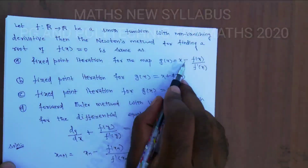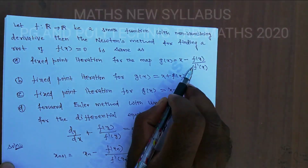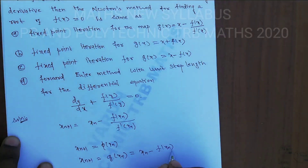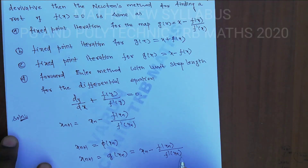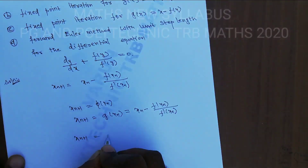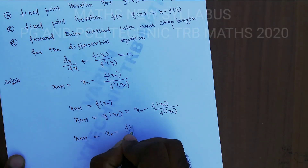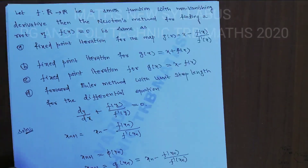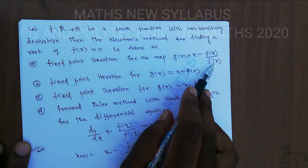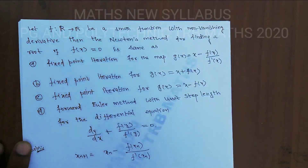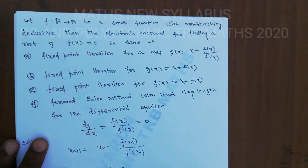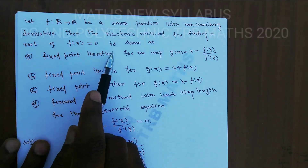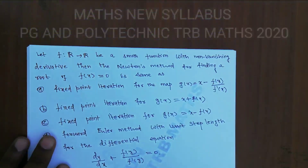g(x_n) is equal to x minus f(x) divided by f'(x). So this is fixed point iteration for the map g(x) = x minus f(x) divided by f'(x). Therefore, the Newton-Raphson method for finding roots of f(x) = 0 is nothing but fixed point iteration for this map. So Option A is correct.